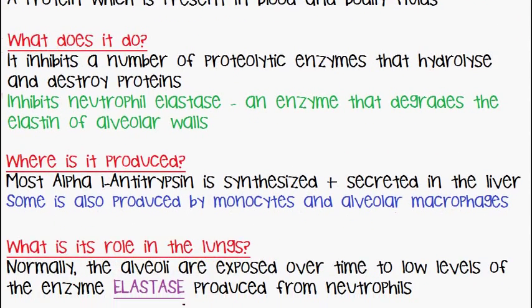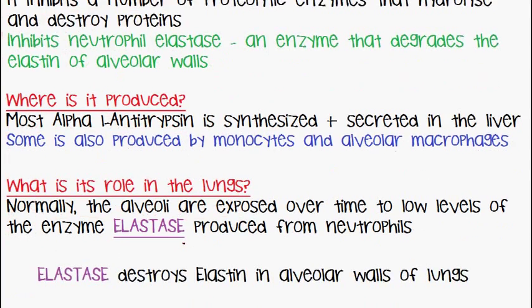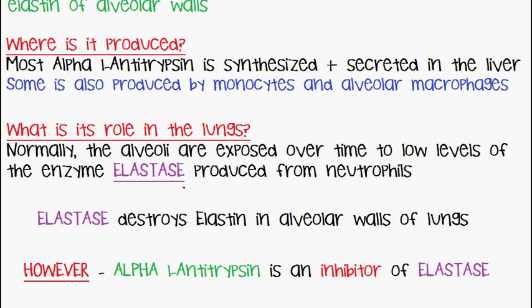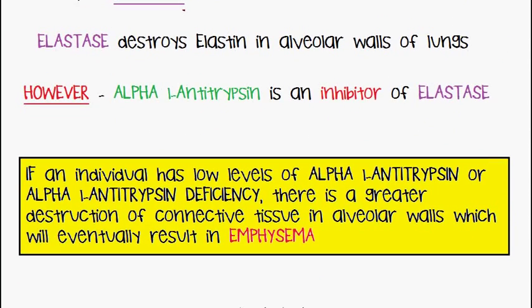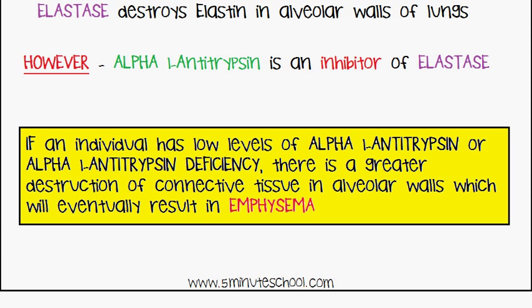So what is its role in the lungs? Normally, the alveoli are exposed chronically to low levels of the enzyme elastase, which is produced by the neutrophils. The elastase which is produced destroys the elastin of the alveolar walls of the lungs. However, alpha-1 antitrypsin is an inhibitor of elastase. So if an individual has low levels of alpha-1 antitrypsin, or they have the inherited disorder alpha-1 antitrypsin deficiency, there is greater destruction of the connective tissue in the alveolar walls of the lungs, which will eventually result in emphysema.